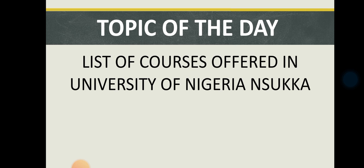This is the list of accredited courses offered in University of Nigeria, Nsukka, popularly known as UNN. The first on our list is Accounting, followed by Adult Education, Agriculture Extension Services, Agriculture and Bioresources Engineering, Agricultural Economics, Agricultural Science and Education, Agriculture, Animal Science, Archaeology, and Architecture.